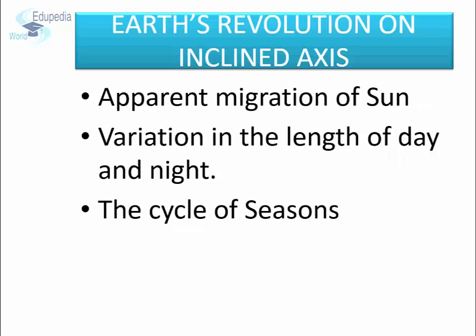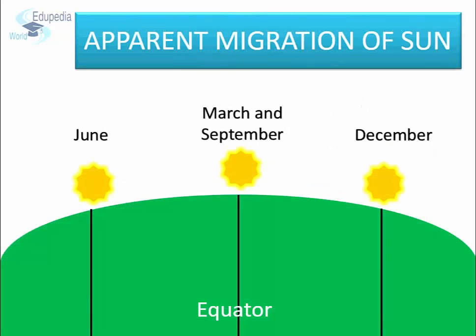Since the Earth is rotating and revolving on an inclined axis, there are great variations experienced on Earth. Due to the inclined axis, the following effects are seen: apparent migration of sun, variation in the length of day and night, and the cycle of seasons. Let us look at each one of these.